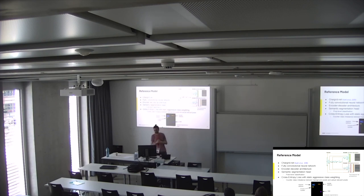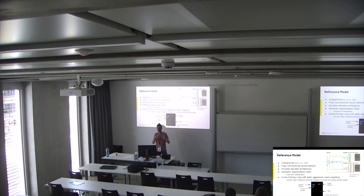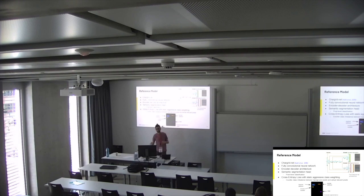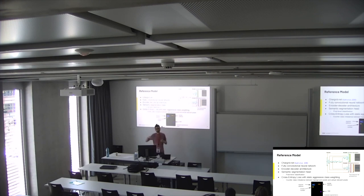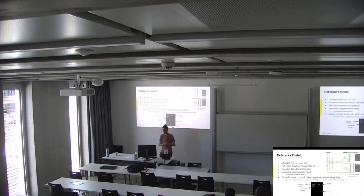At the bottom you see an example of a segmentation mask — basically the output of the model, showing for example where the receiver address, sender address, invoice number, or total amount are in an invoice document. The data is pretty imbalanced — we have a lot of background pixels and the colored pixels are the relevant ones. When we just use the cross-entropy loss, the model tends to just predict background. To counter this we use static-aggressive class weighting, weighting the relevant pixels more than the background in the loss, and this seems to work quite well.